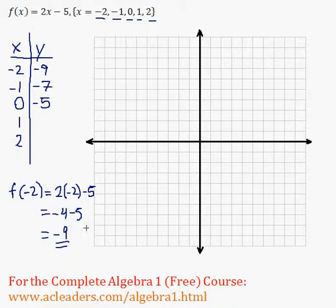Well, I'm doing it verbally, I'm just not doing it algebraically on the screen here. So 1 times 2, 2, minus 5, negative 3. And finally, if I plug in 2, 2 times 2, 4, 4 minus 5, negative 1.